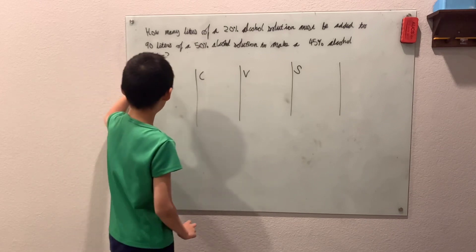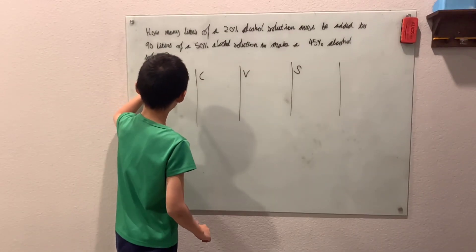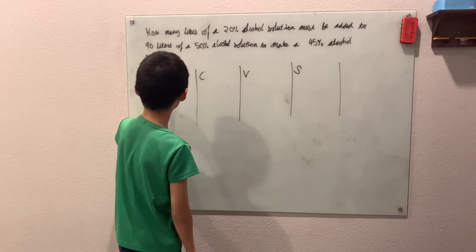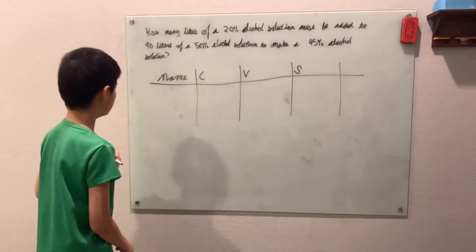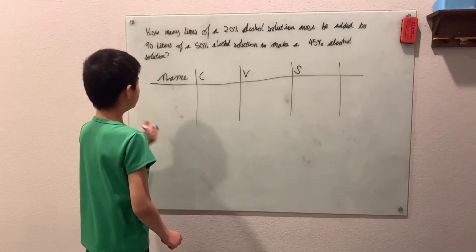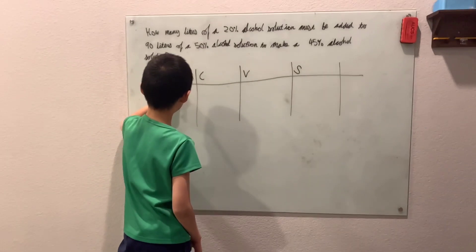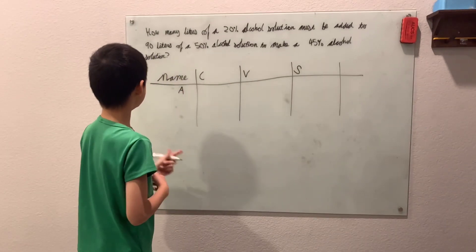And I'm just going to include a name column here just so that we can be organized. Okay, so we'll just start off with mixture or solution A.